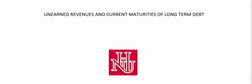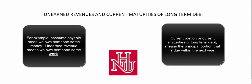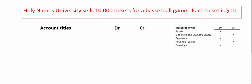While we're talking about current liabilities, let's talk about two pretty straightforward topics: unearned revenues and current maturities of long-term debt. Unearned revenues means we owe somebody some work. Remember, any account that has the word payable, accrued, or unearned in it means we owe somebody something — unearned means we owe somebody some work.